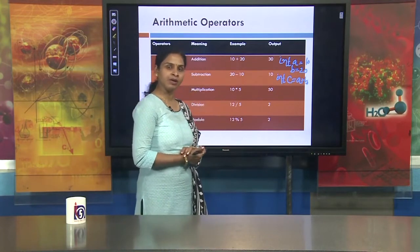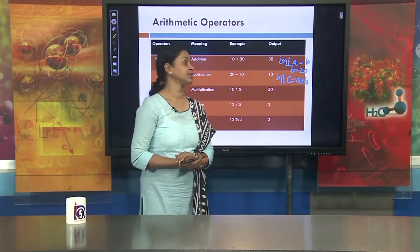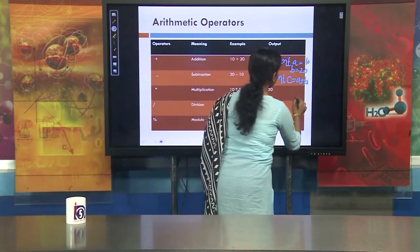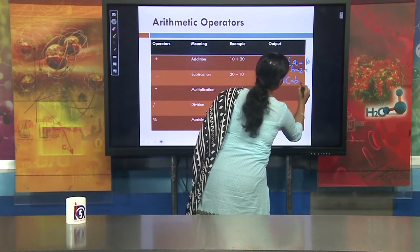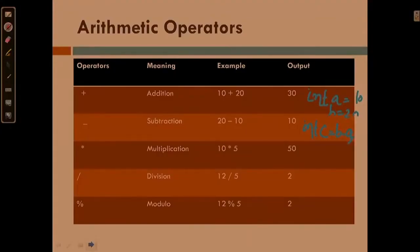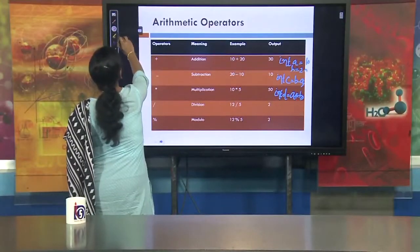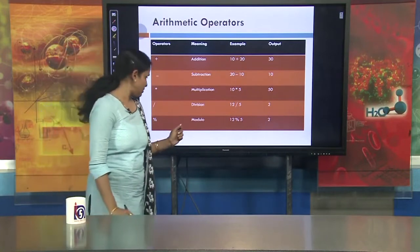Similarly we can use the multiplication operator. For example, I want to multiply a and b. I am taking another variable d where d equals a multiplied by b. This is the way to use the multiplication operator. Next we will discuss the division operator and the modulo division operator.